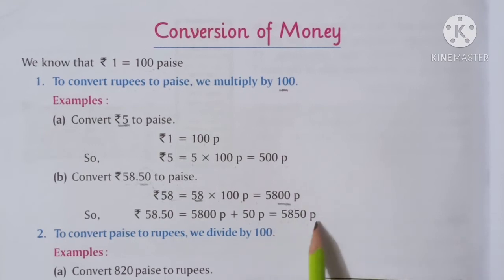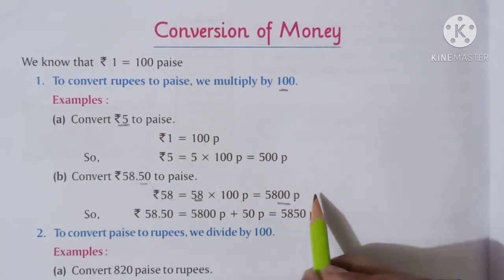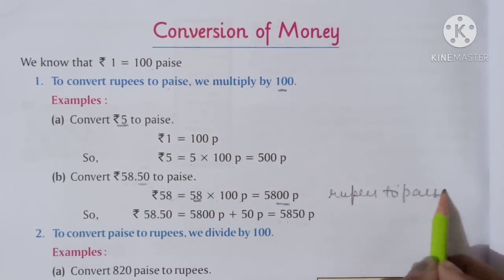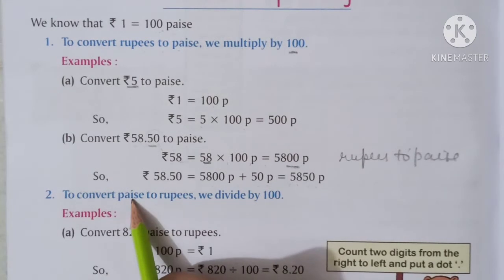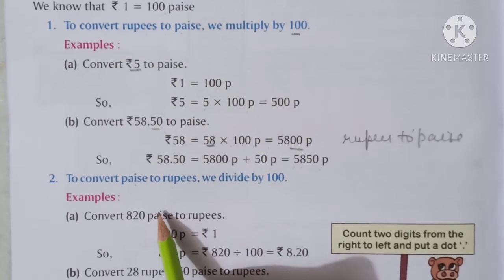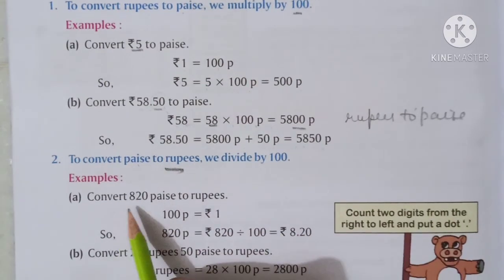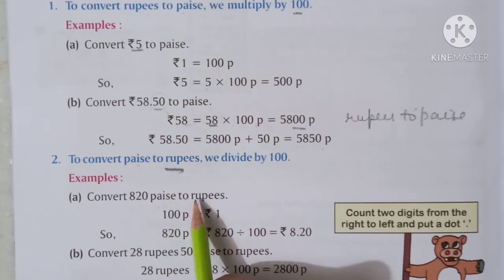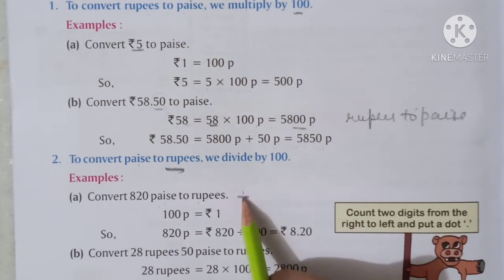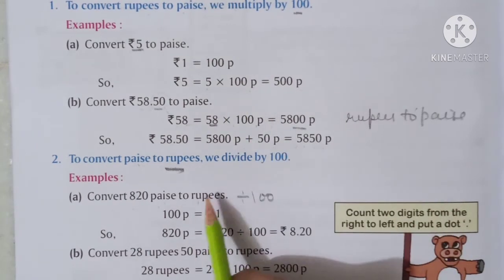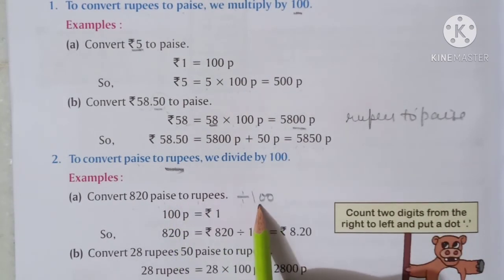Clear? So this is the concept of converting rupees to paise. And now we will discuss how to convert paise to rupees. Paise se rupees pe jane ke liye humein kya karenge? Divide with 100. Rupees se paise mein convert karne ke liye multiply with 100, and reverse ke liye divide by 100.